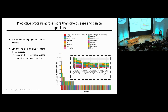Using linkage to electronic health records, we assessed whether predictive biomarkers are specific for one disease or predictive across many. Across the 501 proteins involved in the 67 predictive signatures that improved over the clinical benchmark, 147 of these proteins were predictive across more than one disease — and strikingly, often across more than one clinical specialty — pointing to more general markers of multi-morbidity.